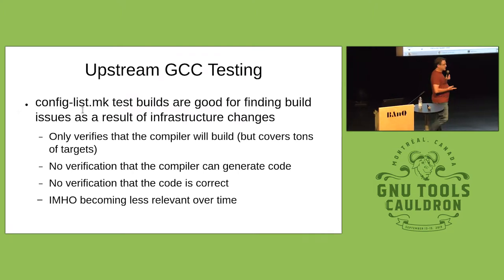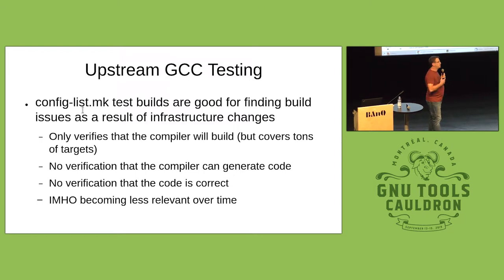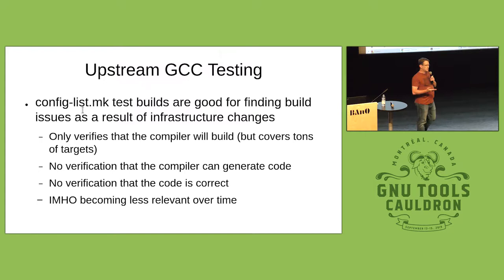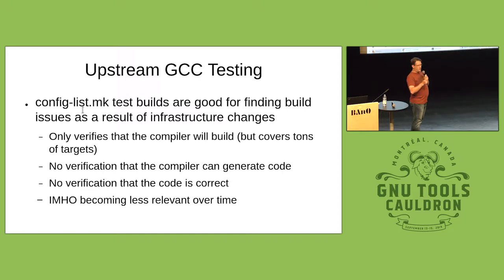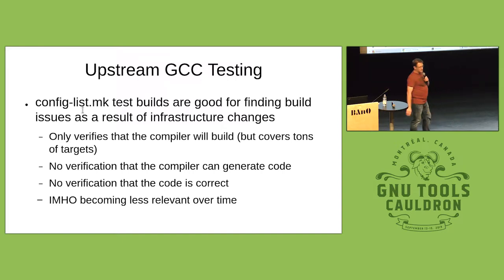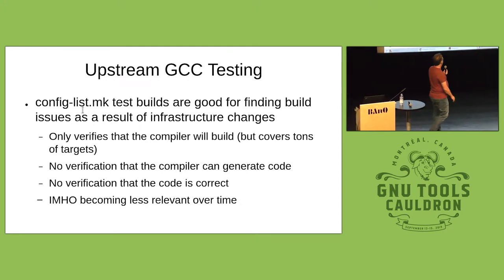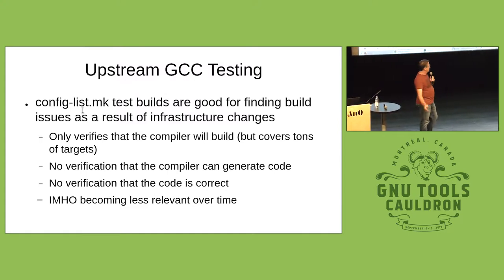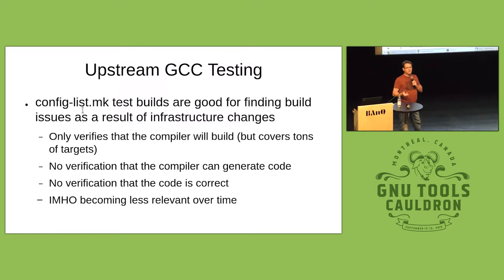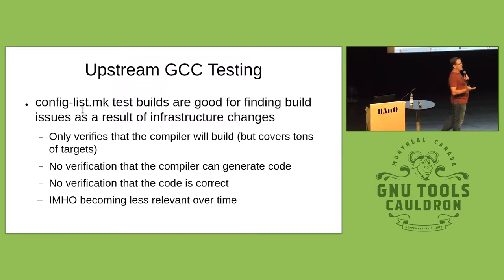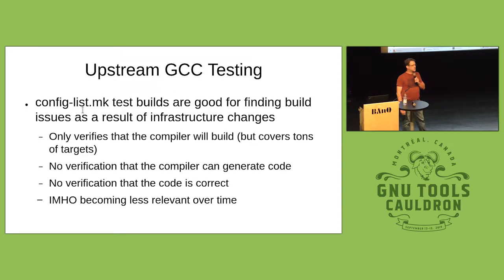One of the other systems we have is config.list.mk. This started many years ago and was primarily useful when we had a lot of conditional compilation. What it does is build all 219 or 230 targets — whatever the number was — but it only builds the compiler: CC1, CC1+, the Ada compiler. There's no verification that the compiler can actually generate code, no verification that the code is correct, and you don't know if the assembler can even accept what you've built. Because we've been eliminating conditional compilation, its value is dropping dramatically. Has anybody done a config.list.mk build in the last year? Not a single hand — that tells me a lot.